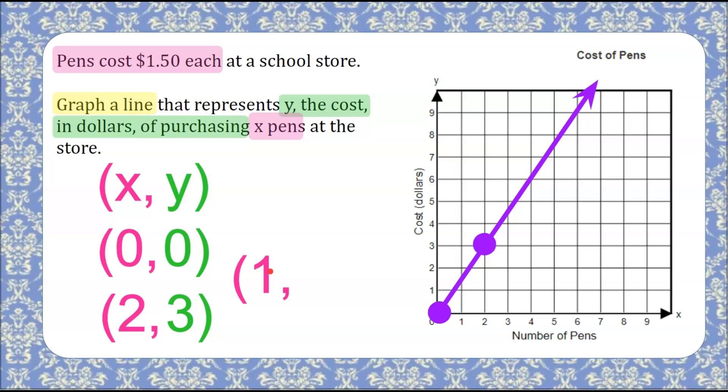So let's look if I buy one pen. One pen would cost me $1.50. One pen, halfway between one and two for $1.50, and I plot my point, and it's on my line. So that's my safety net. That's my check.